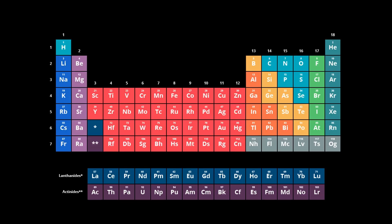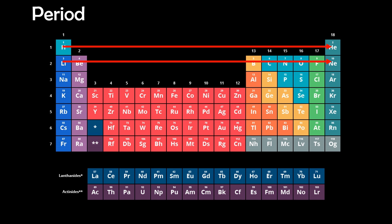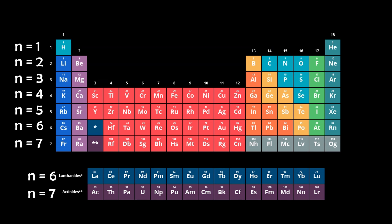The periodic table offers a visual guide to understand electron configurations. Each row or period corresponds to the highest principal quantum number of an atom's electrons in the ground state. So for the first row, we have n equals one. For the second, we have n equals two, and so on.